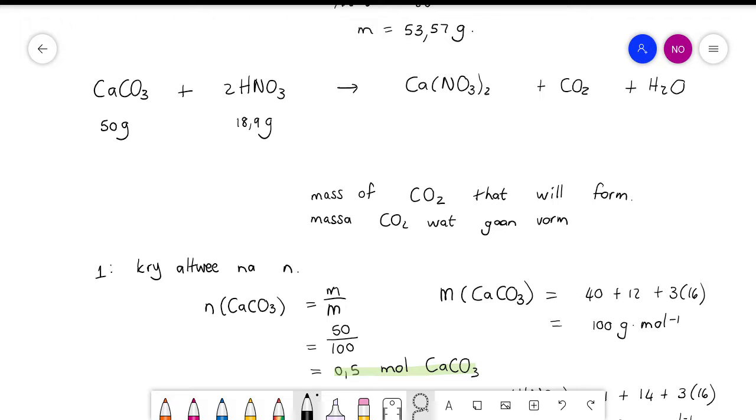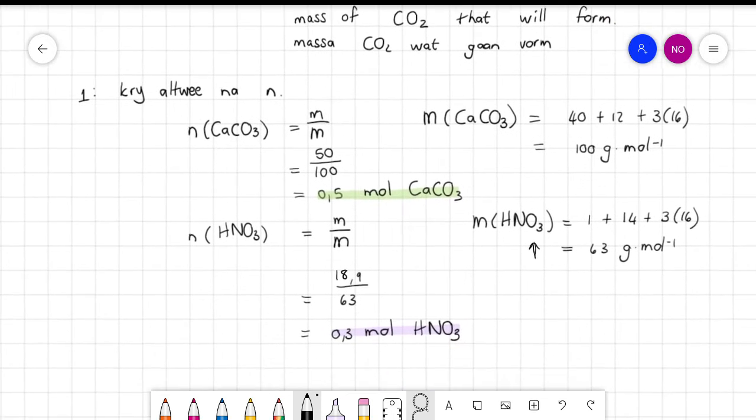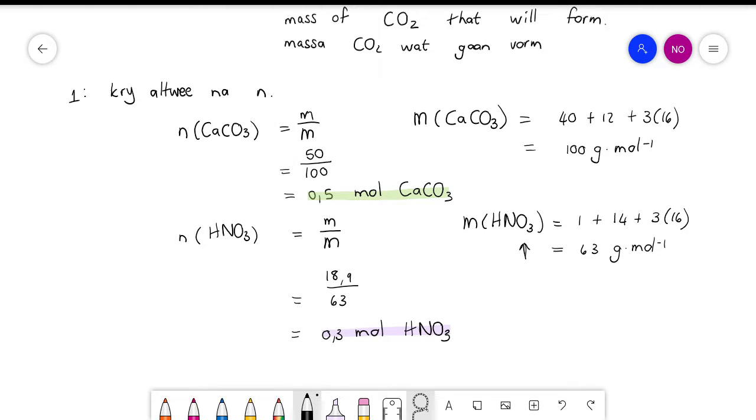So I'm going to first go and convert both of them to moles. And this is what we did Friday. So I took the 50 grams of calcium carbonate that I had and said that's 0.5 moles of calcium carbonate. And then I took the 18.9 grams of the nitric acid and converted it to moles and said it's 0.3 moles nitric acid.